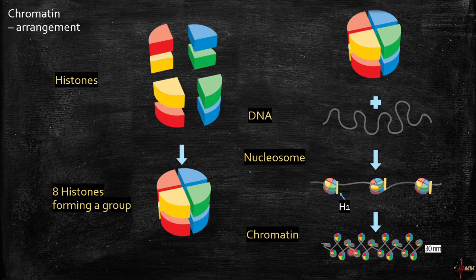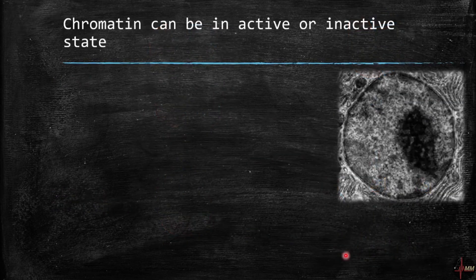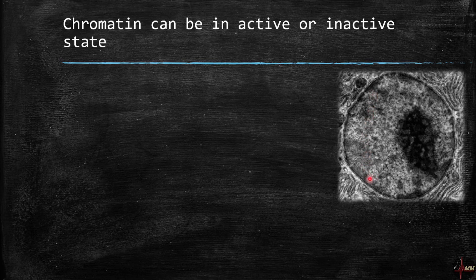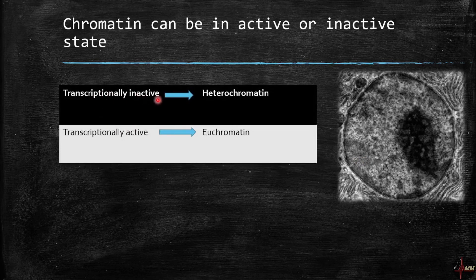The chromatin can be in an active or inactive state — this is a very important point. You can see some dark areas and some light areas in this image. In the dark areas, the DNA is transcriptionally inactive, meaning the DNA cannot be transcribed into RNA; this region is called heterochromatin. The transcriptionally active regions are the light areas, called euchromatin. The dark area in the center is the nucleolus, which is very rich in RNA.